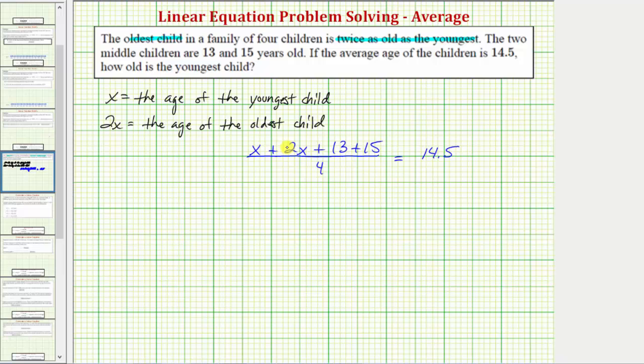Let's simplify the numerator by combining like terms. x plus 2x, or 1x plus 2x equals 3x. So we have the quantity 3x plus 13 plus 15 equals 28, divided by four, must equal 14.5.